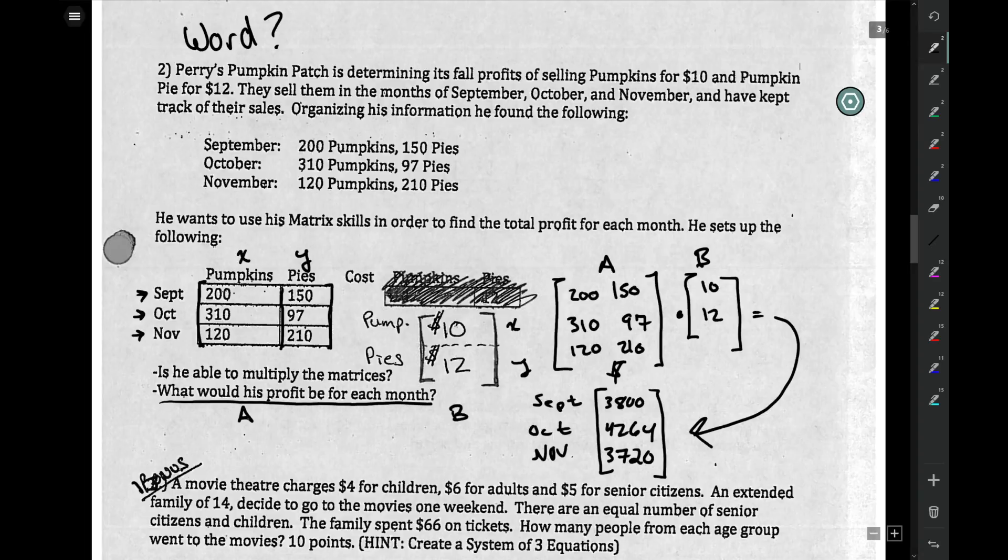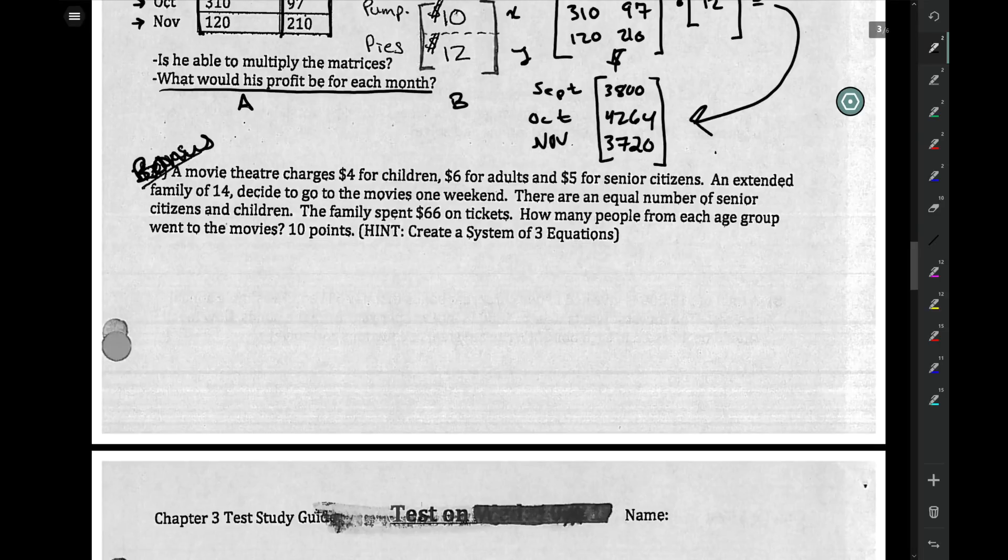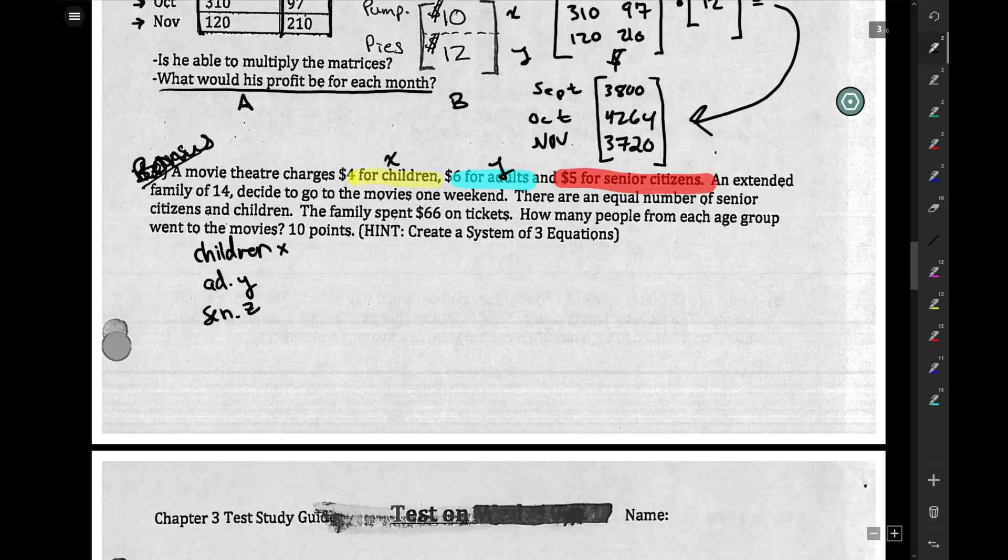The other thing, this here is a bonus question. A movie theater charges $4 for children, $6 for adults, and $5 for senior citizens. Just like before, we have three different variables. Now this is actually a system of three, and it's bonus. That's why I didn't go over it more specifically in class. But it's really easy, honestly. We'll say children are x, adults are going to be y, and seniors z.